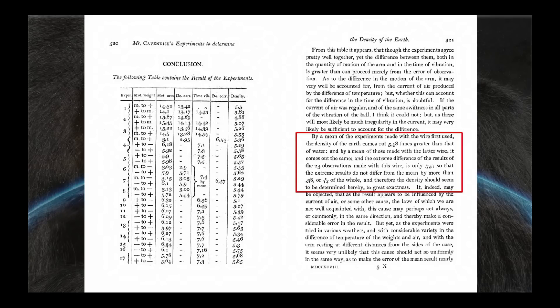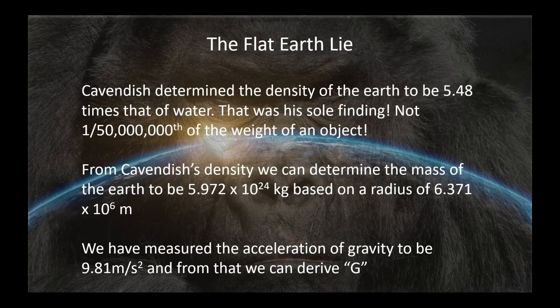Henry Cavendish had no idea what an understatement that was. He thought he was within 1/14th of the actual value. And in fact, he was well within 1/100th of the actual value. And it remains to this day one of the most remarkable initial experiments anyone ever conducted. So what is it flat earth is lying about? They're lying about that 1/50 millionth. Cavendish determined that the density of the earth was 5.48 times that of water. That was his sole finding, not 1/50 millionth of the weight of an object.